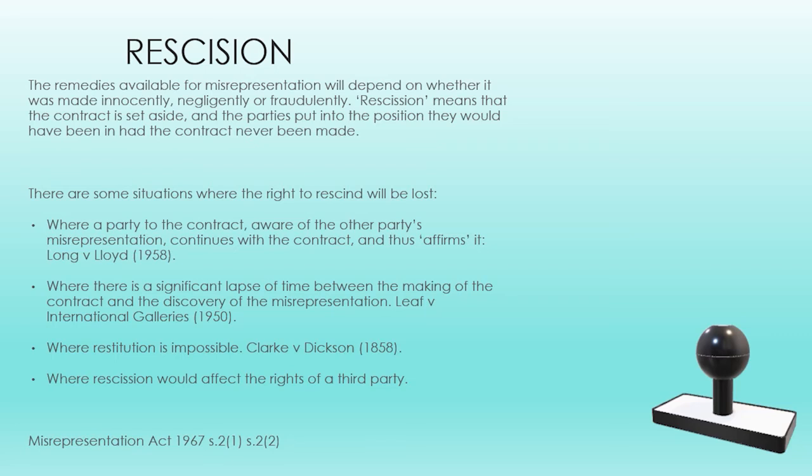Where restitution is impossible, you might also lose the right to rescission for misrepresentation. Since the idea of rescission is to restore the parties to the position they would have been in if the contract had not been made, if property which has been transferred has been consumed or mixed with other property, rescission will not be permitted. See Clark v. Dixon from 1858. Finally, where rescission would affect the rights of a third party, it might not be possible — for example, where goods have been sold to the misrepresentor, who has then sold them on to an innocent third party before the contract has been avoided.